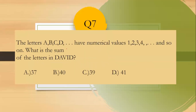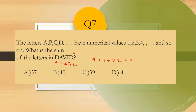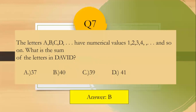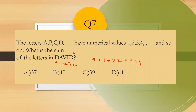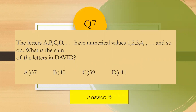Question number seven: The letters A, B, C, D have numerical values equal to the counting numbers 1, 2, 3, 4, and so on. What is the sum of the letters in the word DAVID? D is 4, A is 1, V is 22, I is 9, D is 4. Adding: 4 plus 1 plus 22 plus 9 plus 4 equals 40. The answer is letter D, 40.